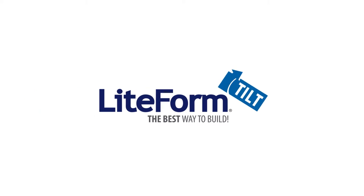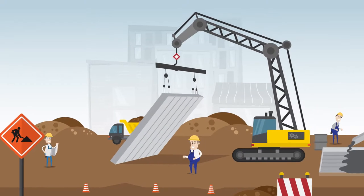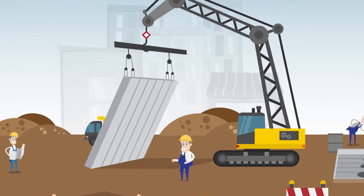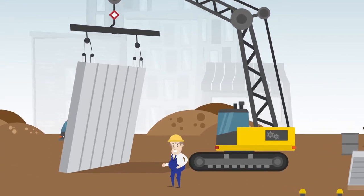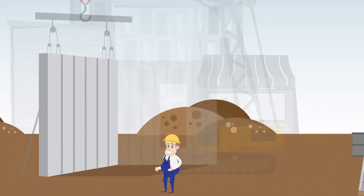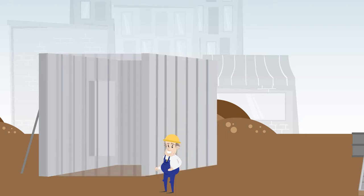That's why Lightform developed Lightform Tilt, where all elements are constructed on the job site. Walls are cast, cured, and tilted in place, and then braced until remaining structures are positioned.